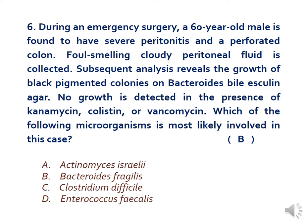During emergency surgery, a 60-year-old male is found to have severe peritonitis and perforated colon. Foul-smelling cloudy peritoneal fluid is collected. Subsequent analysis reveals the growth of black-pigmented colonies on Bacteroides bile esculin agar. No growth is detected in the presence of kanamycin, colistin, or vancomycin. The answer is B — Bacteroides fragilis, which is a normal inhabitant of the bowel.